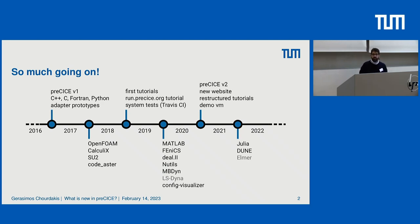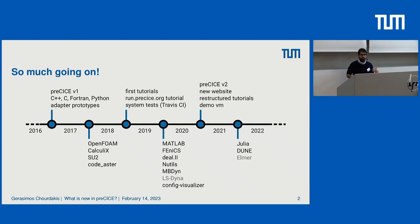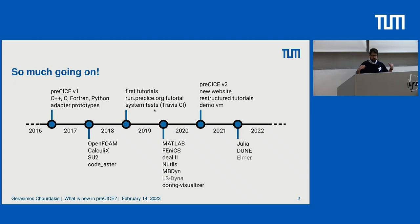Between 2017 and 2018, it's essentially the beginning of the current generation, when myself, Benny, and Frederick started, and David was already involved through his bachelor's thesis. We started getting more adapters — some had already been prototypes and we made them more involved. Later on, we got more people joining, had our first tutorials, and a web-based tutorial on run.precise.org.